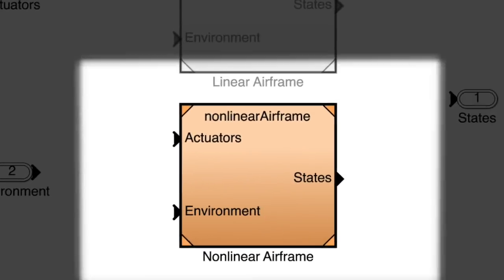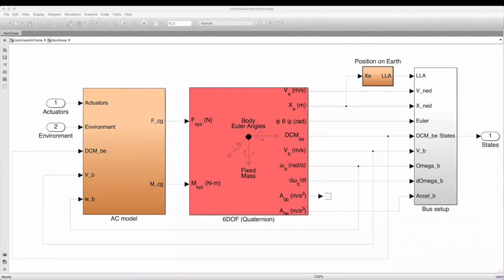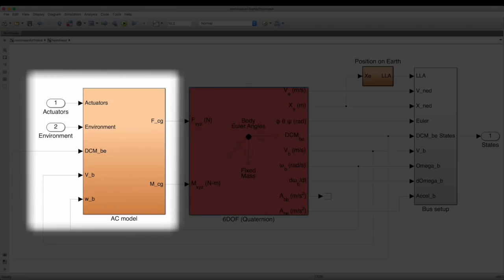Let's take a peek inside the non-linear model to see how it's set up. There are two main blocks. The AC model on the left consists of the actuator models, and a model of how the environment disturbances impact the system. Basically anything that can create a force or a torque on our mini-drone is calculated in that block.